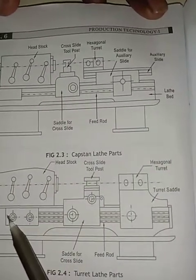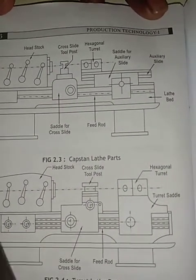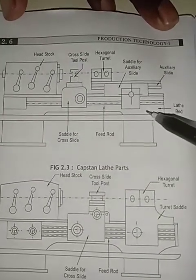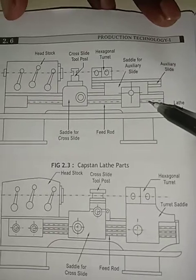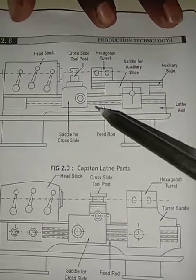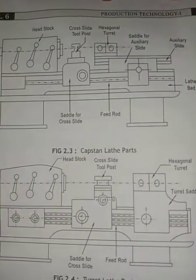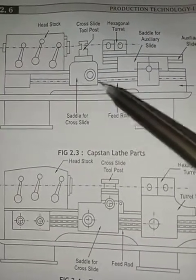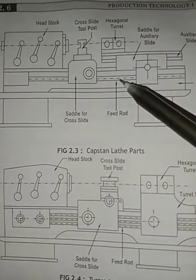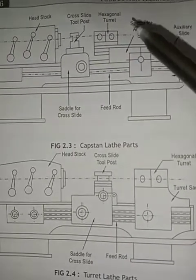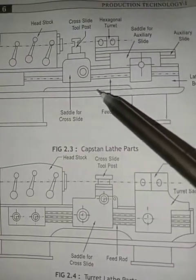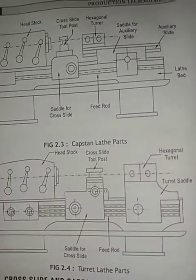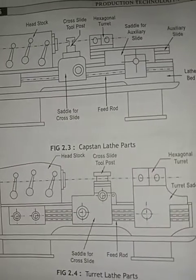Here is the entire length of the lathe bed. This is the lead screw. The bed has a hollow portion. If the cutting chips are produced, they are easily collected in a tray. Lubrication elements and devices are also stored in this hollow portion. This is about the construction of capstan lathe and turret lathe.